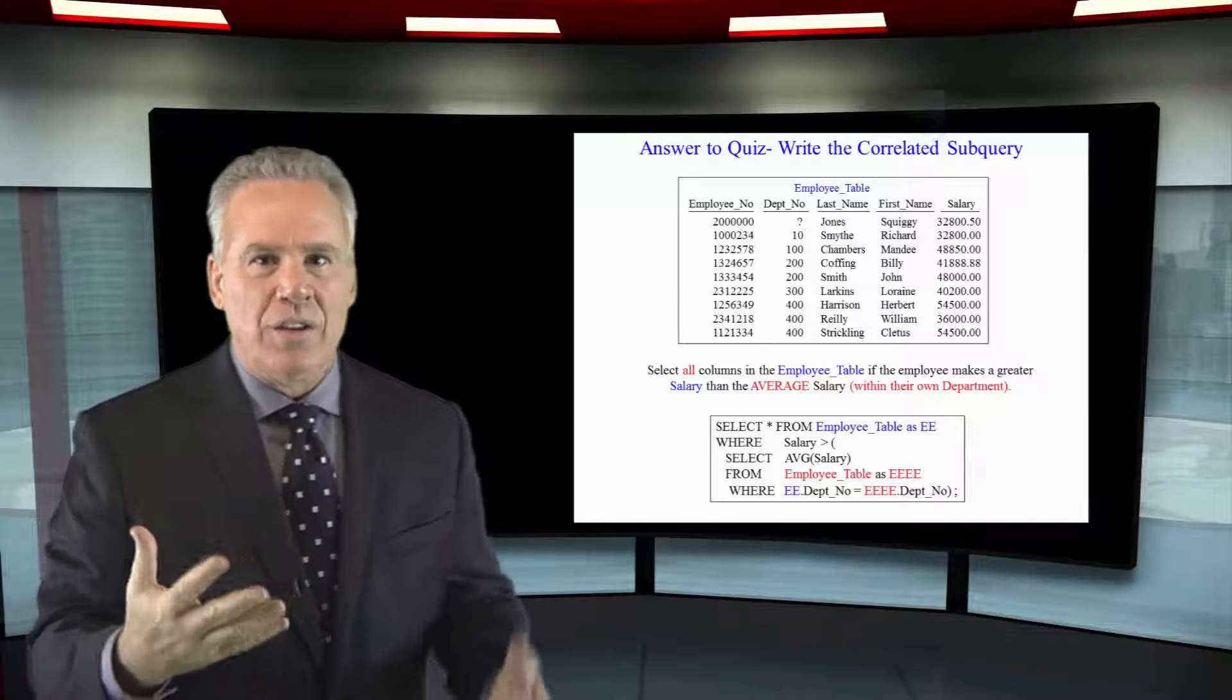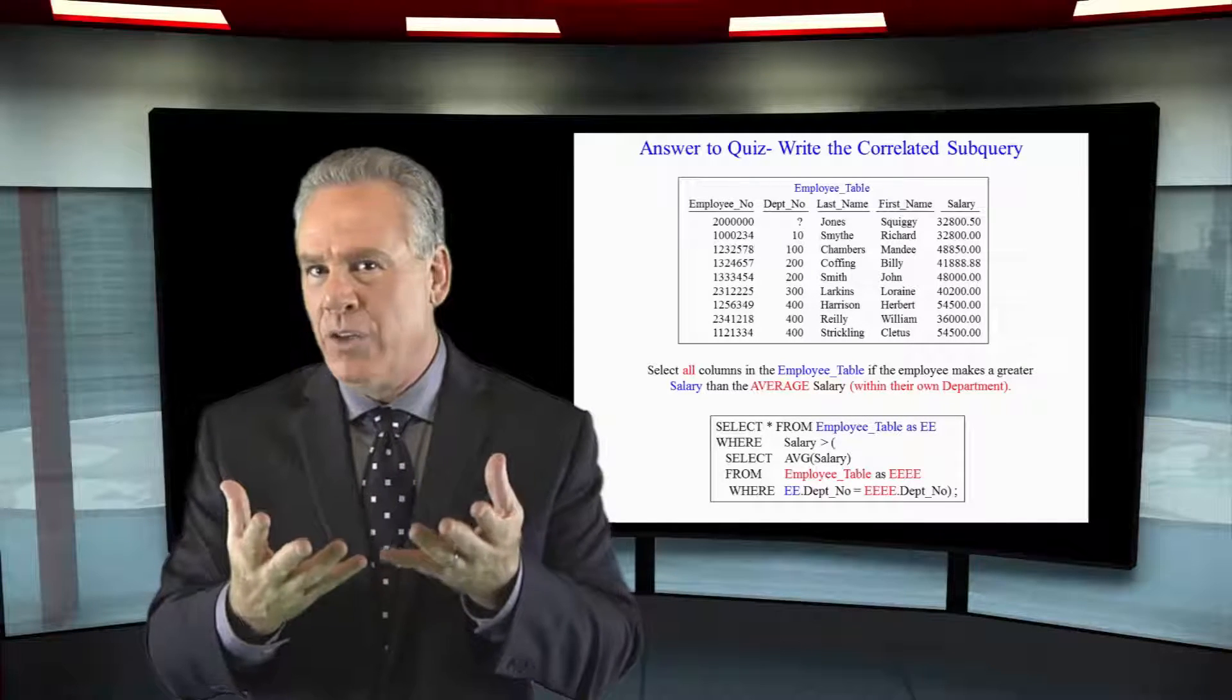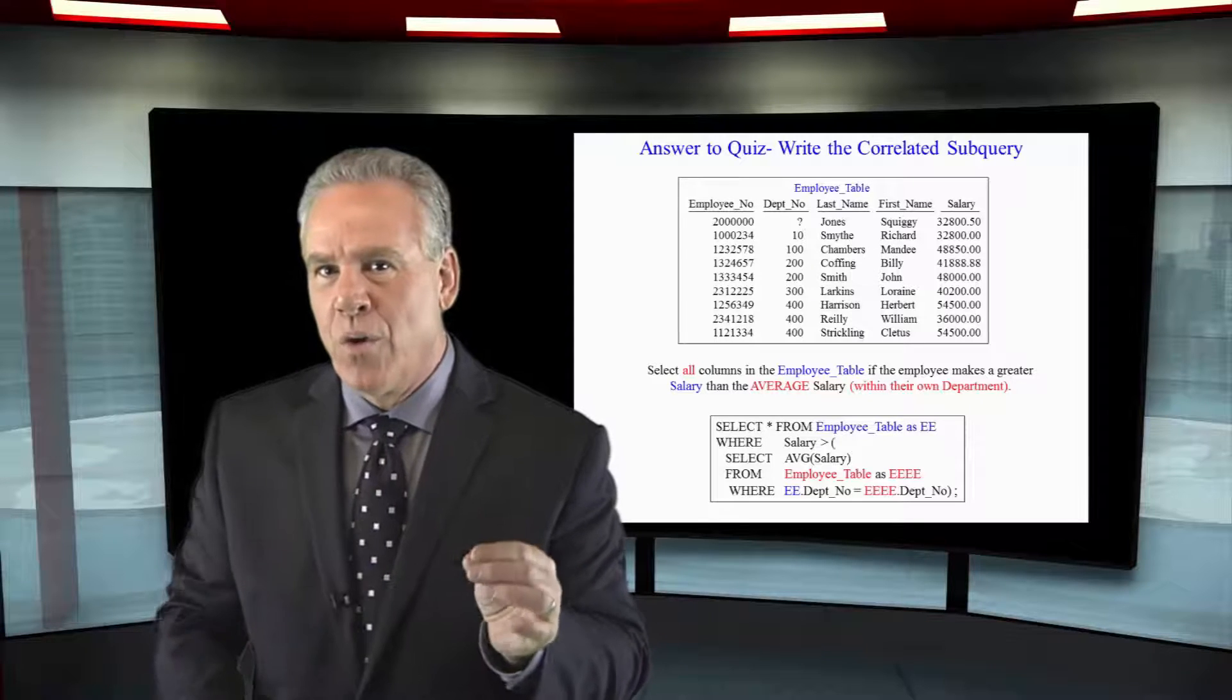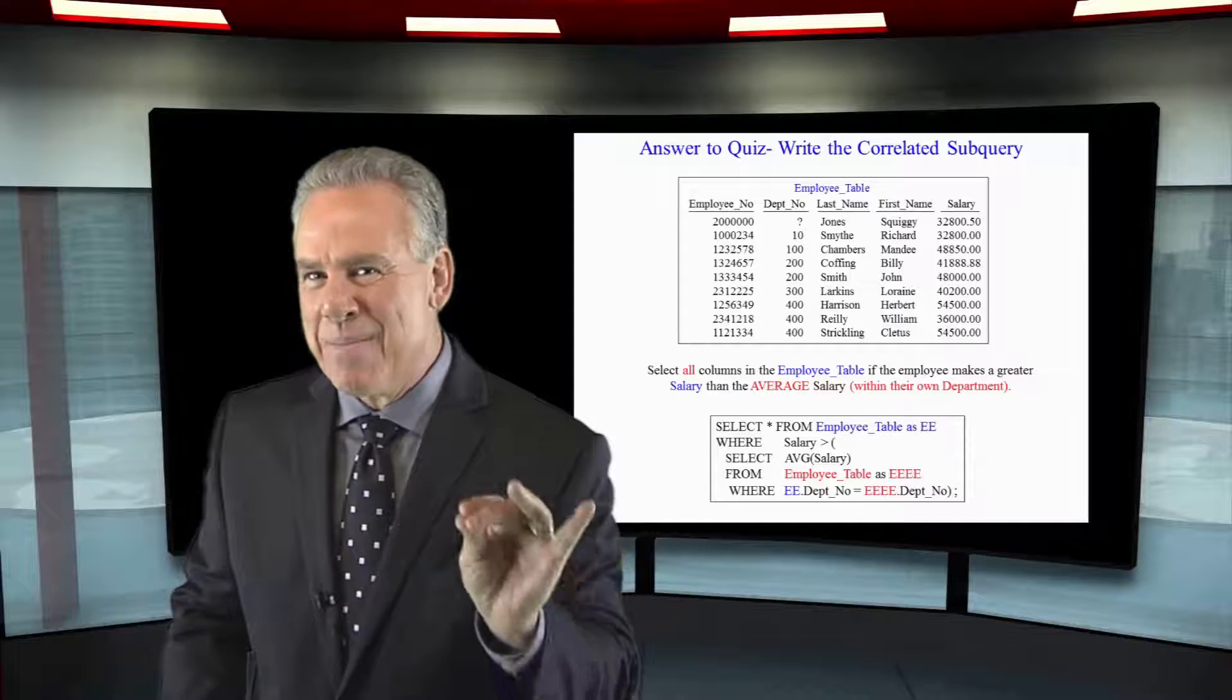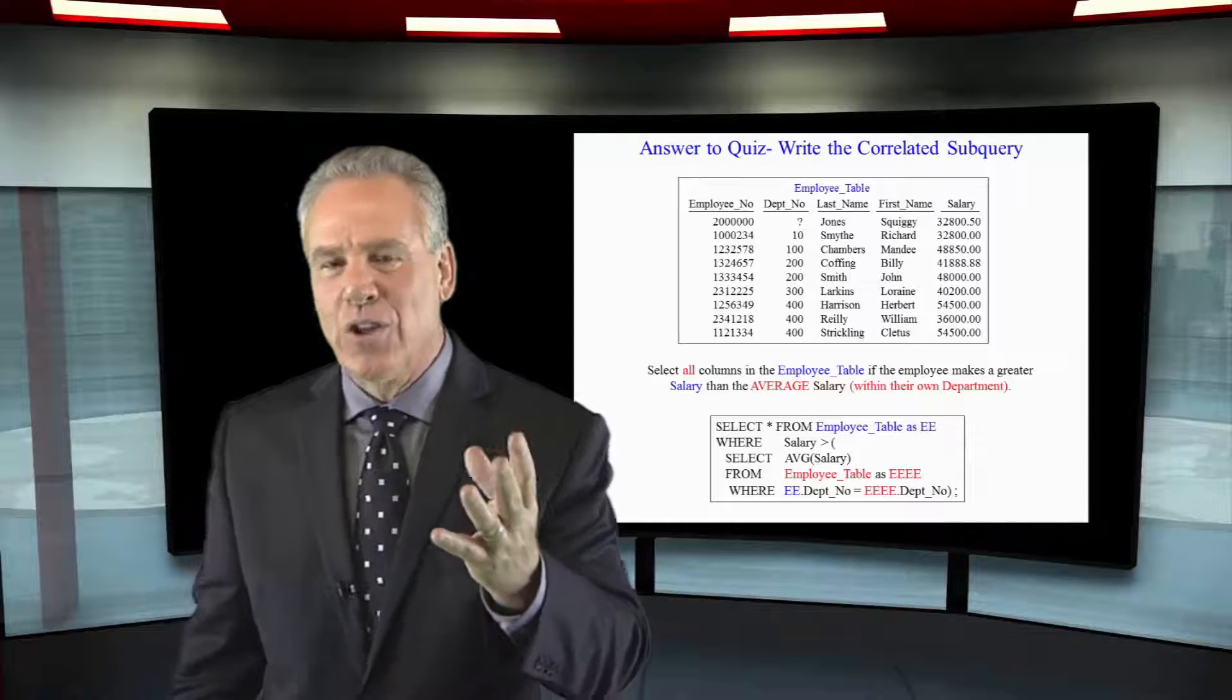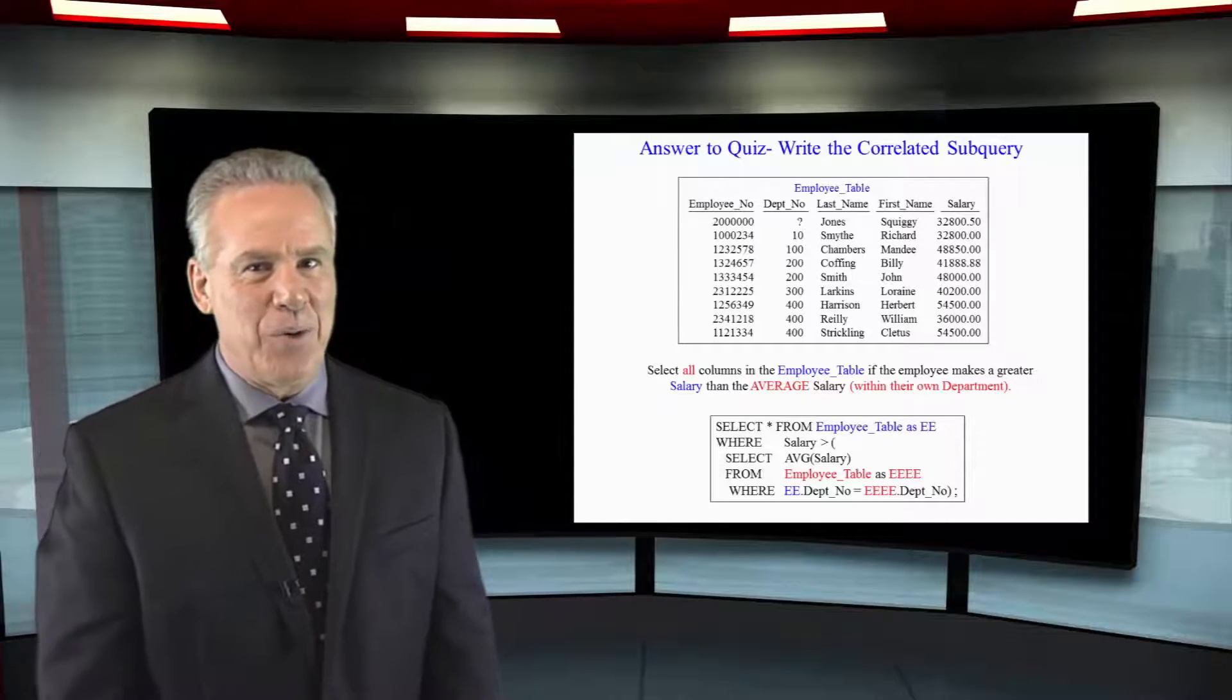And that's how it knows to bring back all the people making greater than the average salary within their own depno. That's your first look at a correlated subquery.